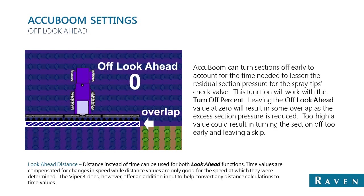Next is the off-look-ahead, which is used for when you're approaching a previously applied area and the system wants to shut the sections off. This will be a lower setting — typically a good starting point is 0 to 0.5 seconds. We want to keep from getting any skips in the field, but we also do not want to overlap too much, so this will require fine, delicate tuning.